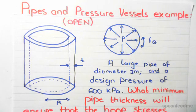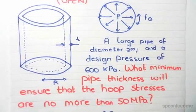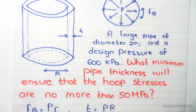We've got a large pipe of a diameter of 2 meters and a design pressure of 600 kilopascals. So the question is: what minimum thickness of the pipe will ensure that the hoop stresses are no more than 50 megapascals?